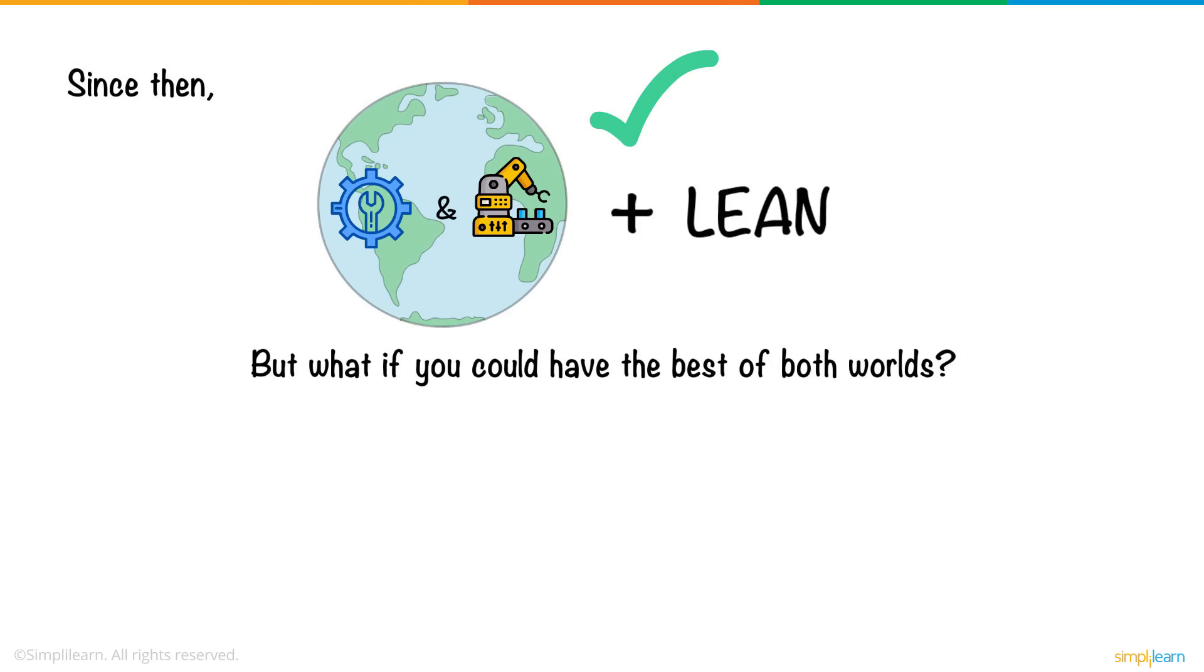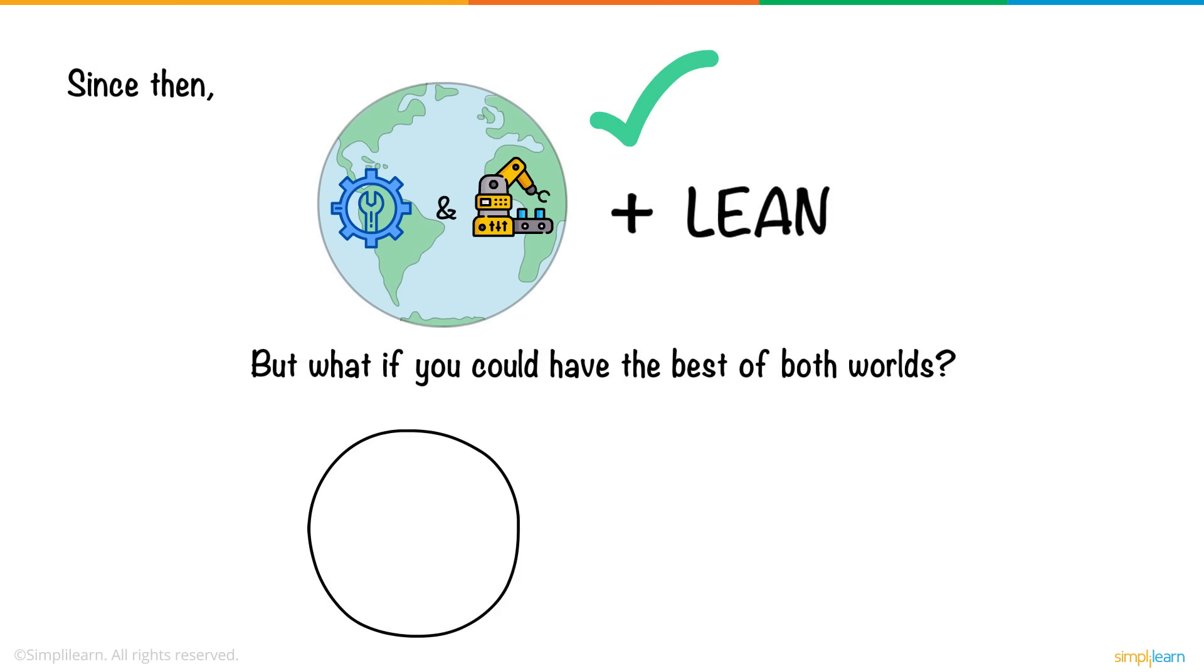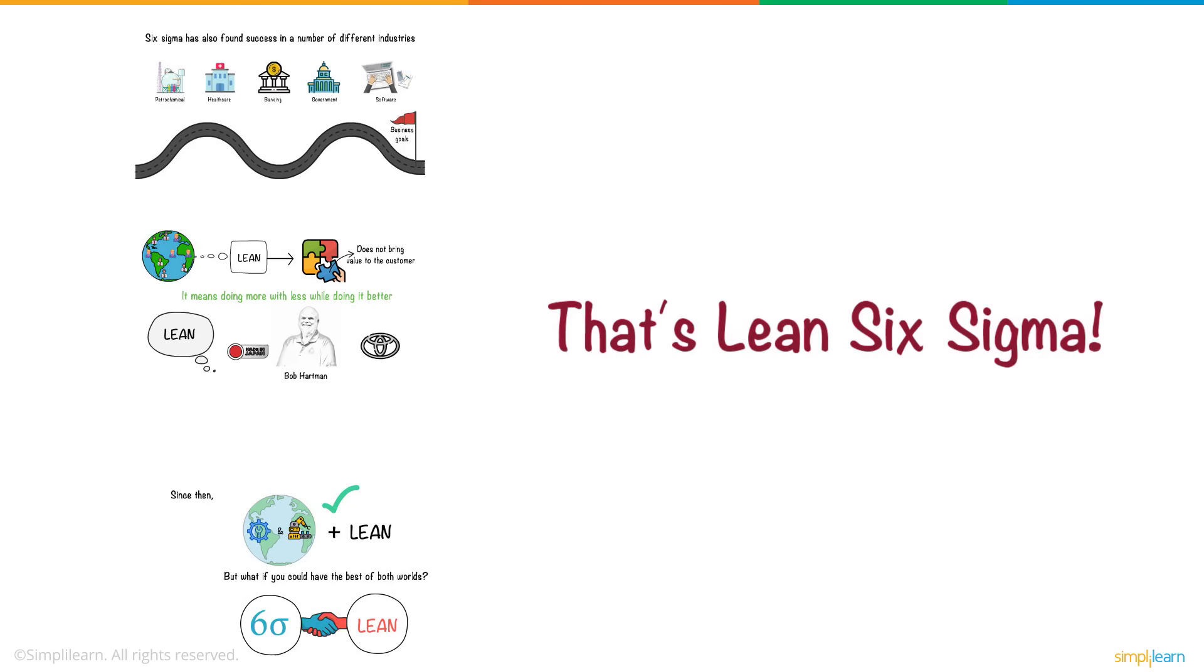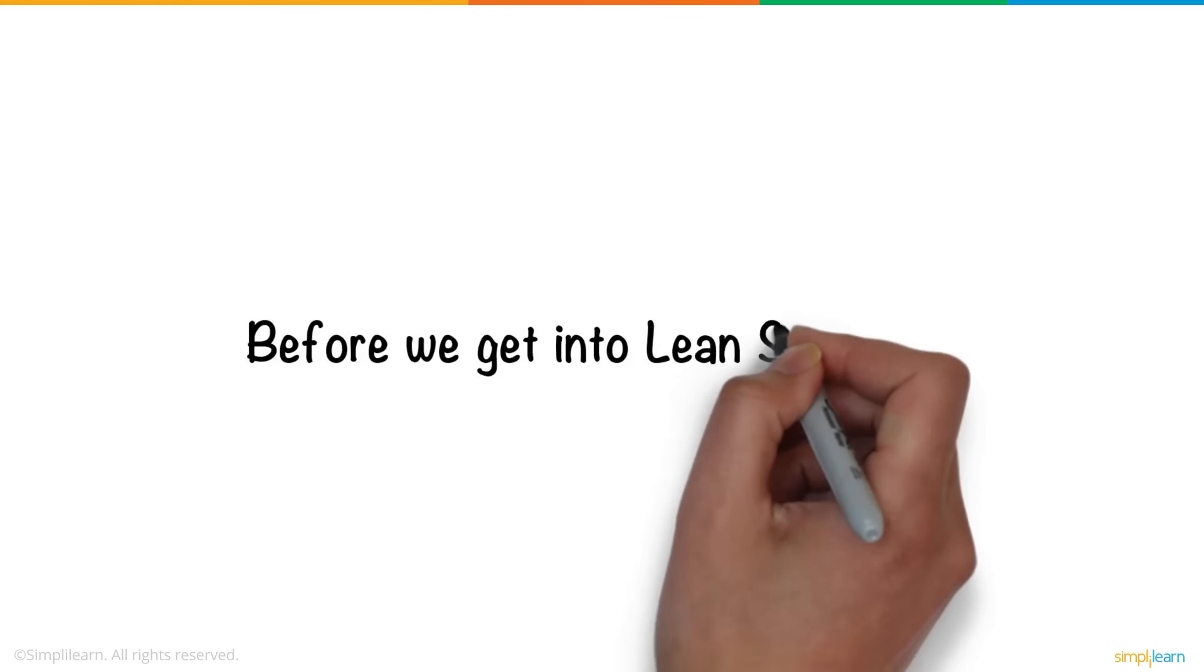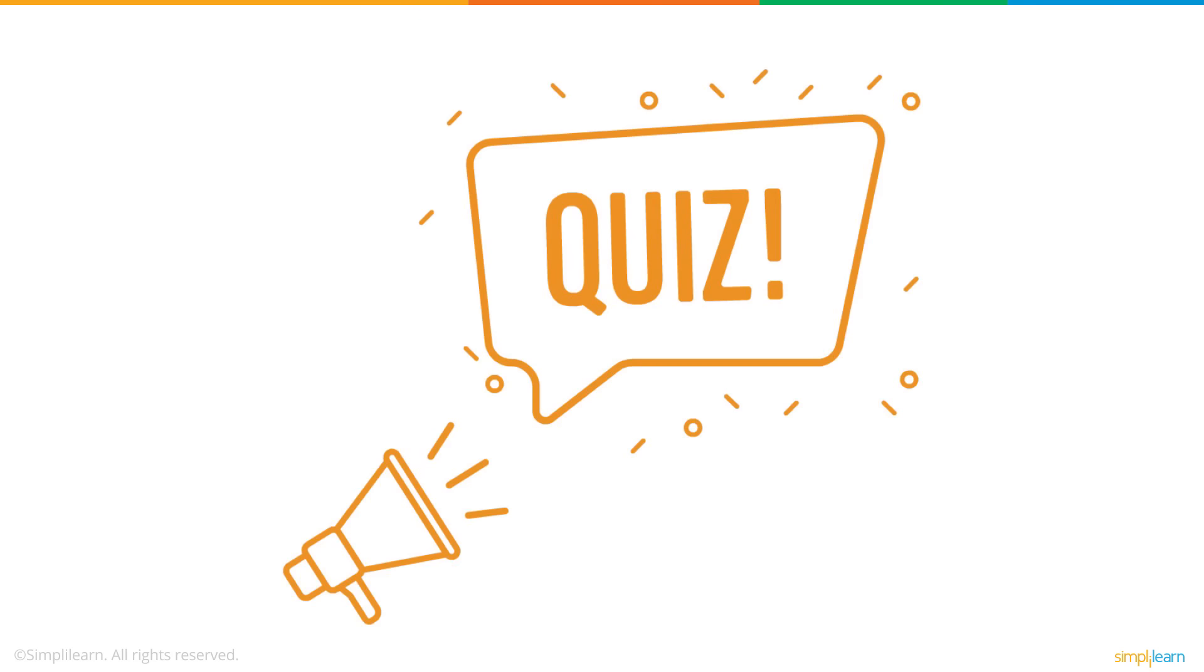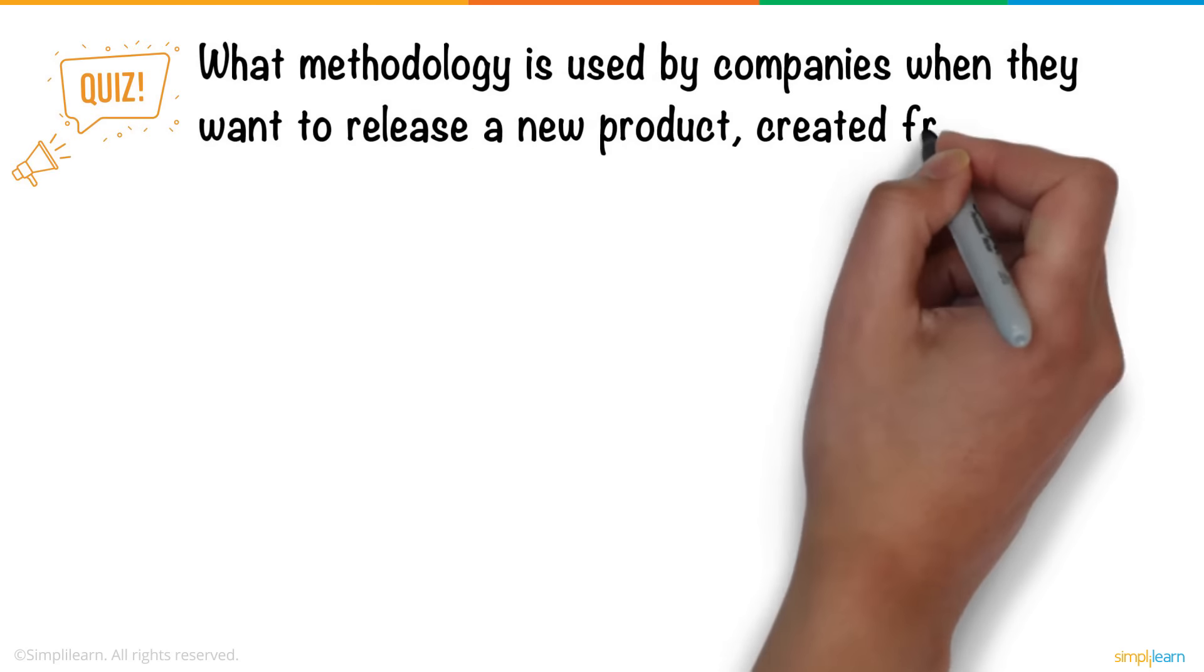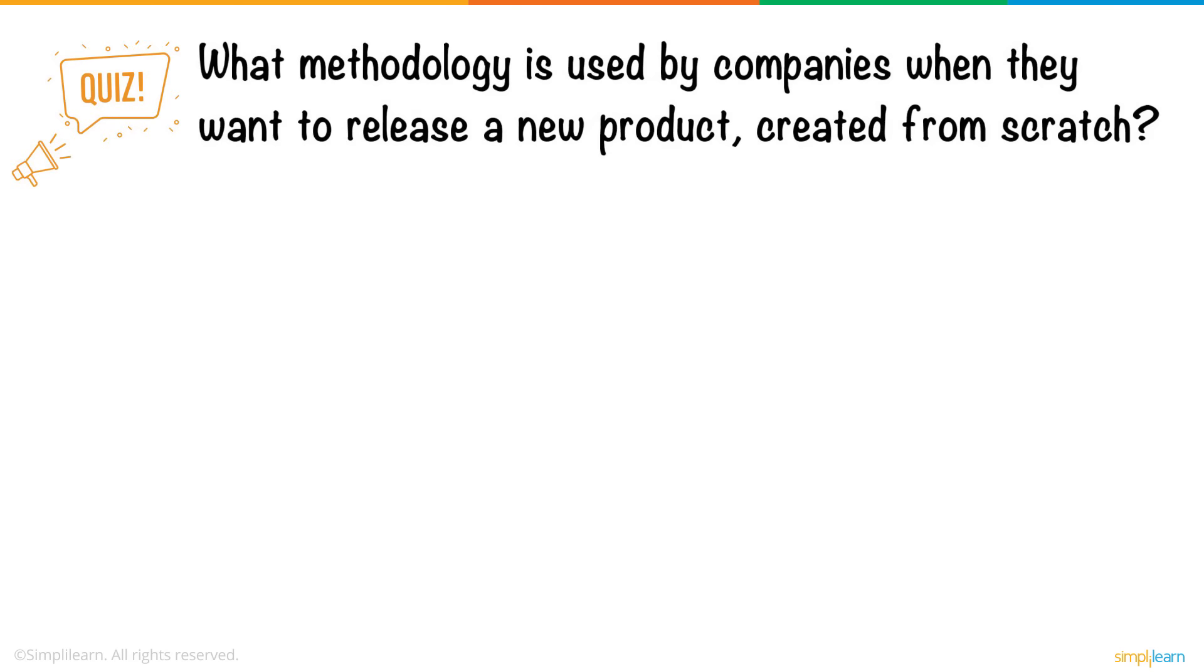But what if you could have the best of both worlds? A combination of both Six Sigma and Lean. That's Lean Six Sigma. Before we get into Lean Six Sigma, we've got a quiz for you. What methodology is used by companies when they want to release a new product created from scratch?